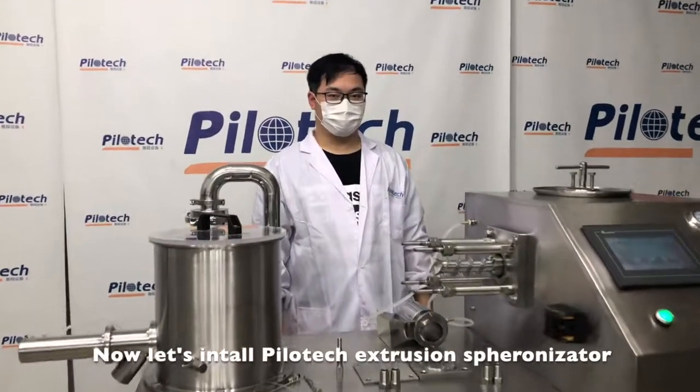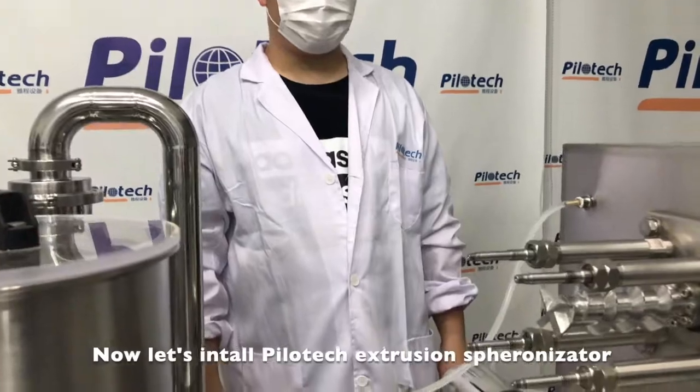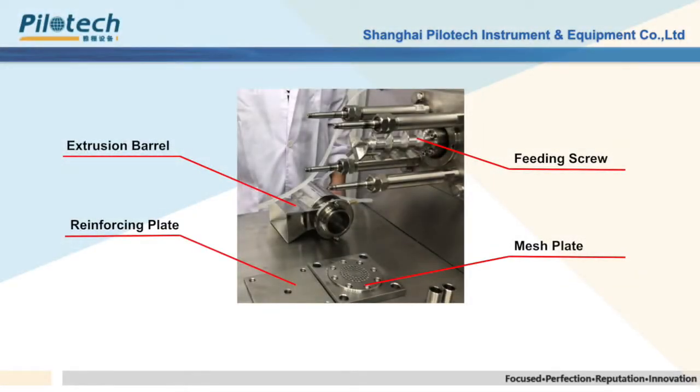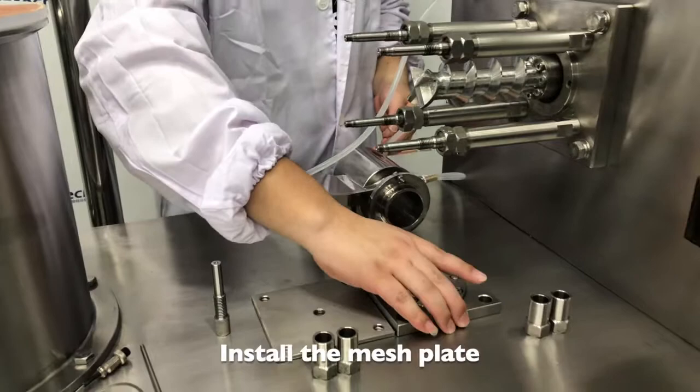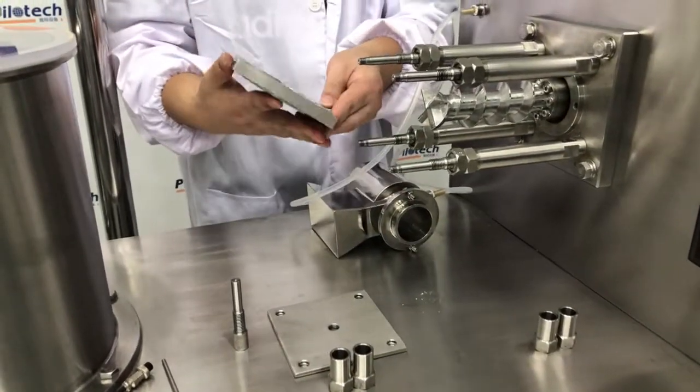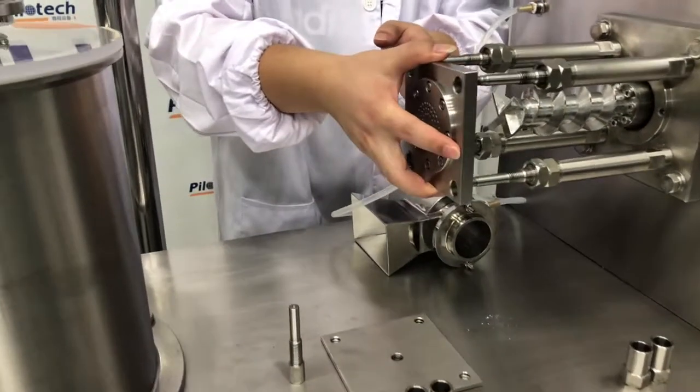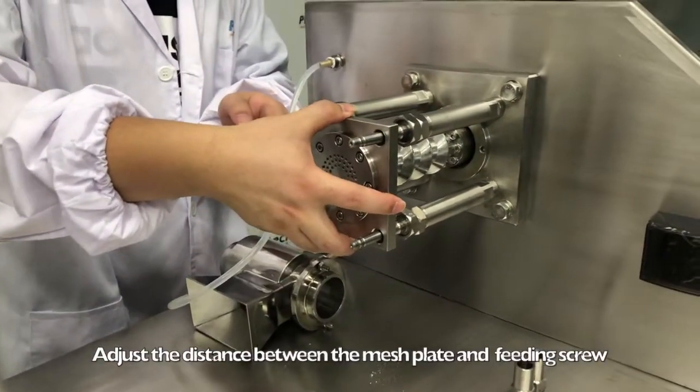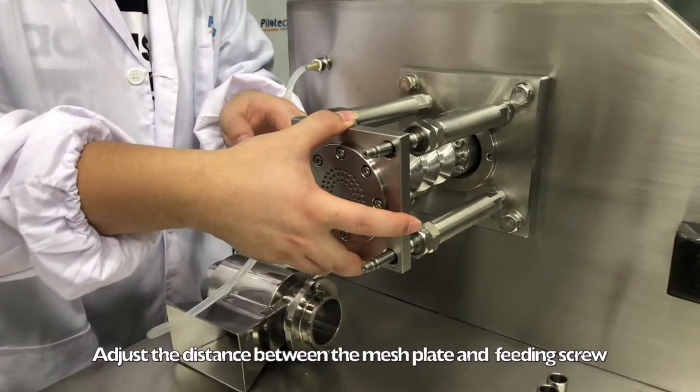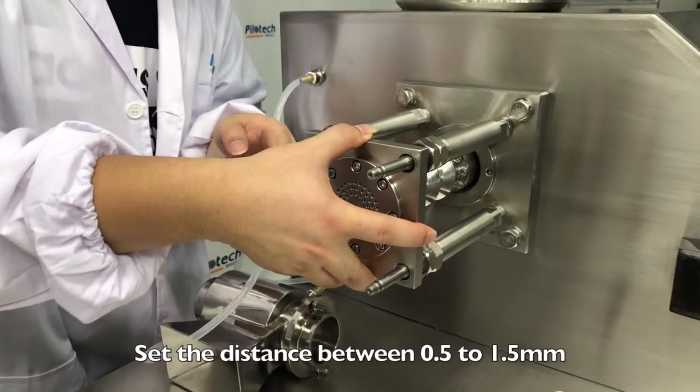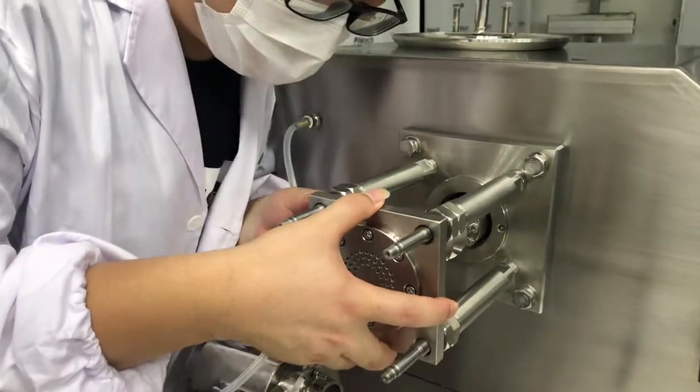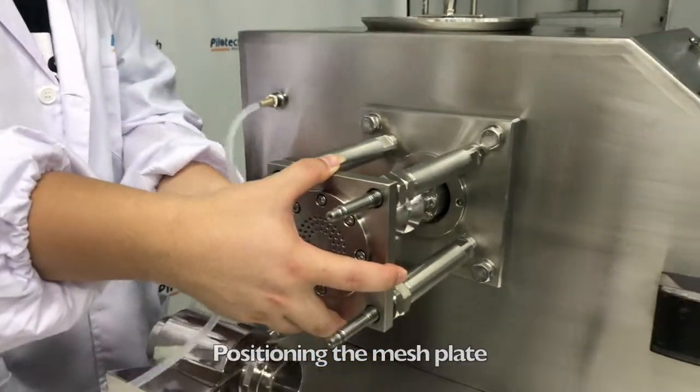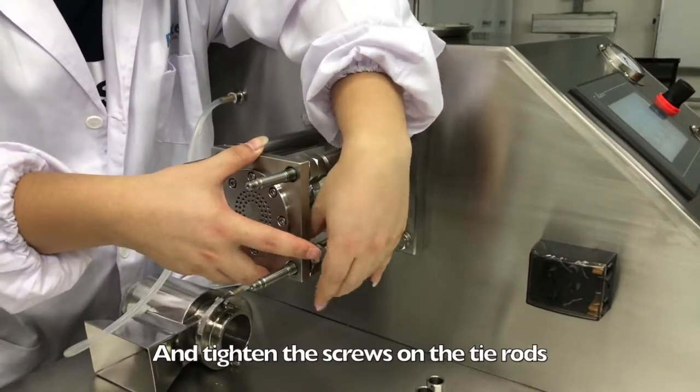Now let's install PILOTEC Extrusion Spheronization machine. Install the mesh plate. Adjust the distance between the mesh plate and the fitting screw. Set the distance between 0.5mm to 1.5mm. Position the mesh plate and tighten the screws on the tie rods.